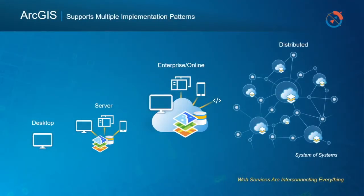ArcGIS supports multiple implementation patterns: the desktop, the server, the new web online experience with enterprise and ArcGIS Online. And this new distributed pattern — this system of systems pattern — is about integrating the other patterns to connect everything. That's the idea.